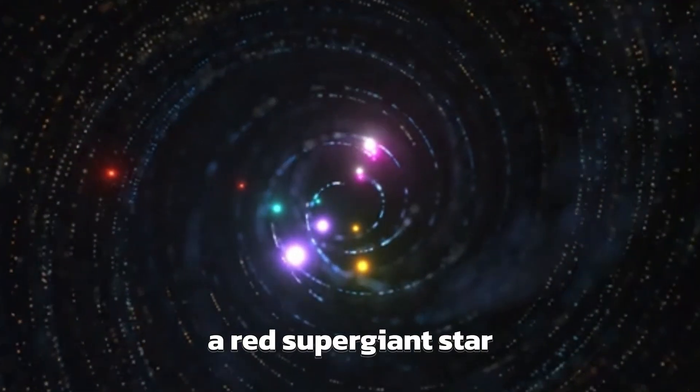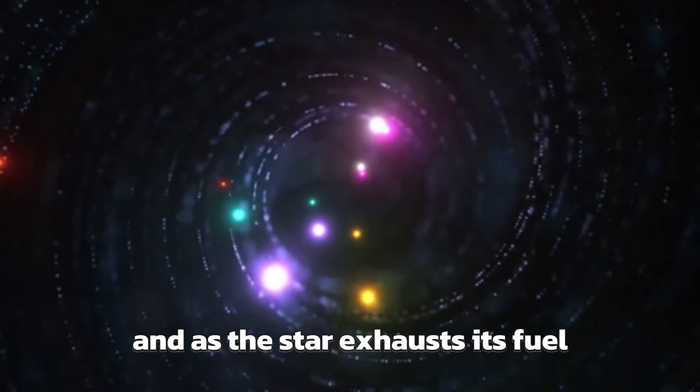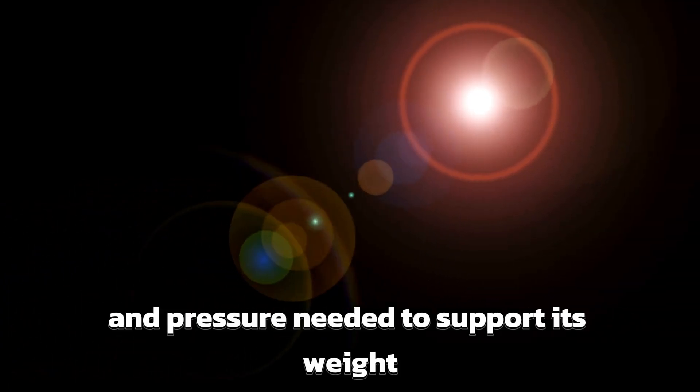A red supergiant star is when it runs out of fuel to burn in its core, and as the star exhausts its fuel, it can no longer create the heat and pressure needed to support its weight, causing it to collapse.